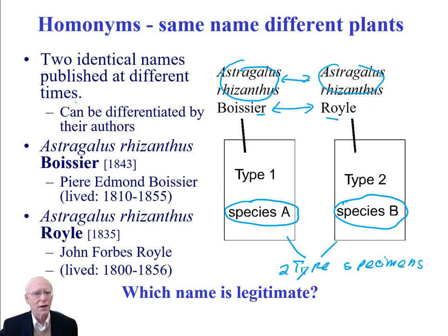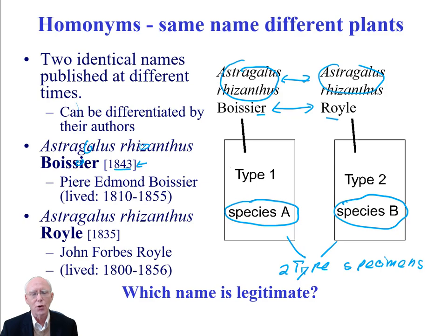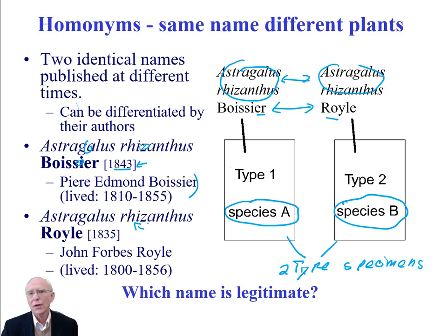Boissier worked in 1843 — I've put his date in brackets because the date is not part of the species name. We never write the publication date as part of the species name; it's always just the generic name, the specific epithet, and the author. But we need to know the date to determine legitimacy, and 1843 is that date. Royle, in 1835, named a different plant Astragalus rhysanthus.